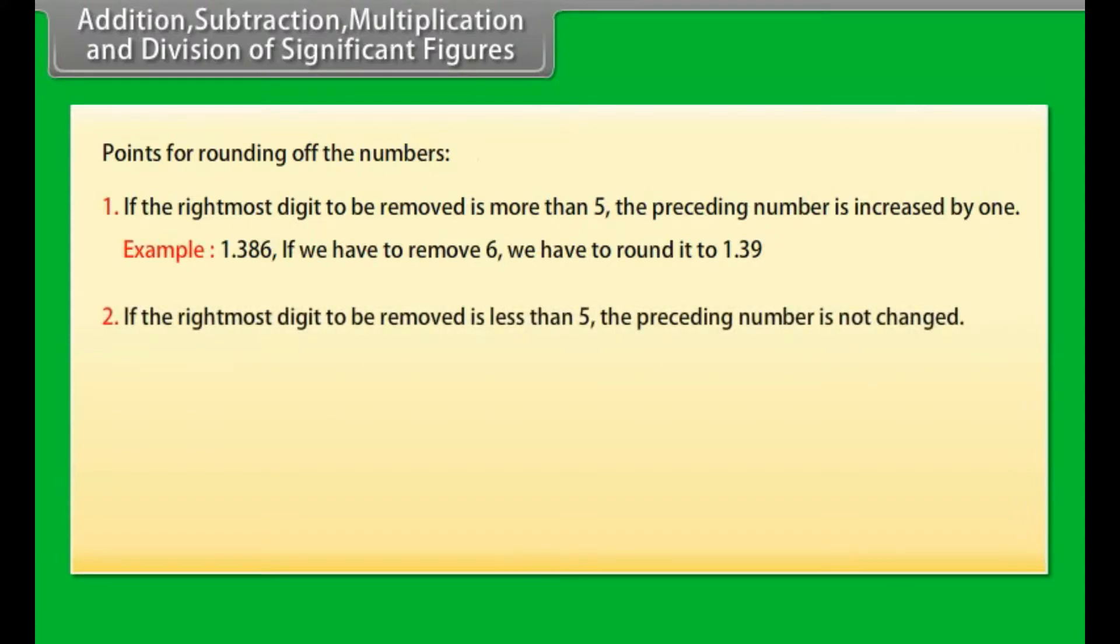(2) If the rightmost digit to be removed is less than 5, the preceding number is not changed. Example: 4.334. If 4 is to be removed, then the result is rounded up to 4.33.